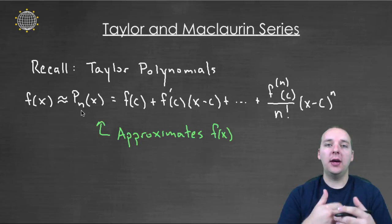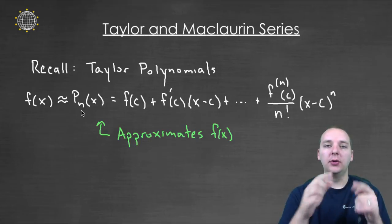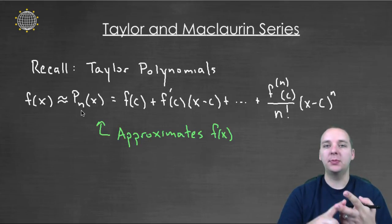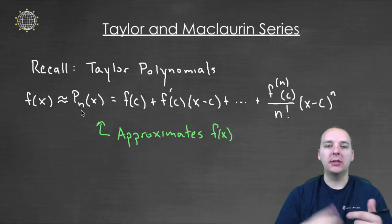But you could also have Taylor polynomials of higher degree like quadratics that would approximate your function, or a cubic or degree four or degree five. They would approximate your function no matter if it was trigonometric, exponential, logarithmic. It doesn't matter. And what we found was that the higher the degree that you used the more accurate the approximation.